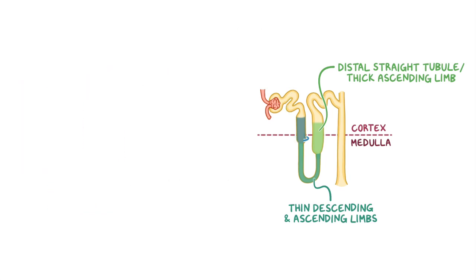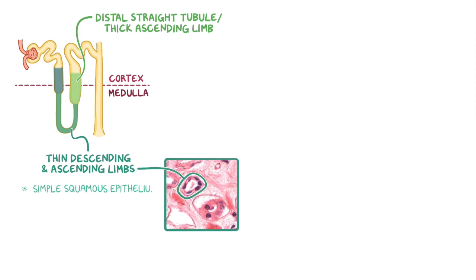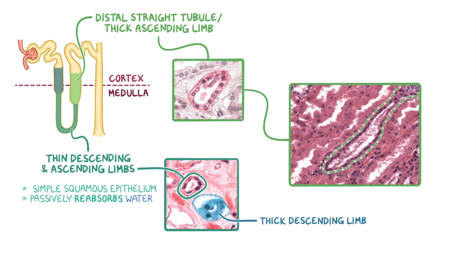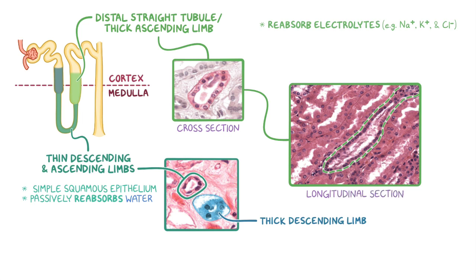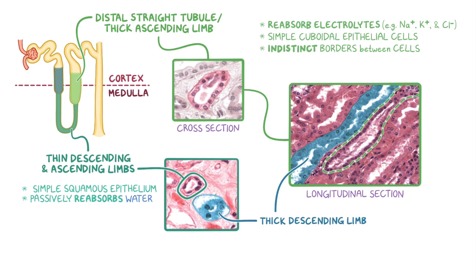The thin descending and ascending limbs of Henle's loop consist of a simple squamous epithelium and passively reabsorb water. The wall of the tubule is noticeably thinner compared to the thick descending limb, which is seen in the bottom right of this image. The thick ascending limb starts in the medulla and ascends into the cortex. This tubule is responsible for reabsorbing electrolytes such as sodium, potassium, and chloride. In both this cross-section and longitudinal section of the tubule, we can see that the walls consist of simple cuboidal epithelial cells. These cells commonly have unclear or indistinct borders between them, and in the longitudinal section the thick ascending limb can be differentiated from neighboring tubules of the thick descending limb based on its more neutral, noticeably lighter staining.